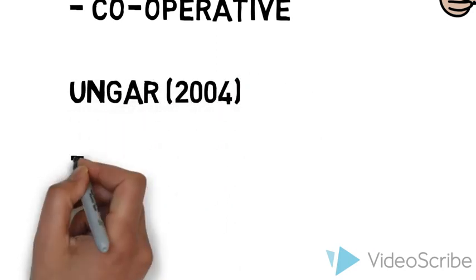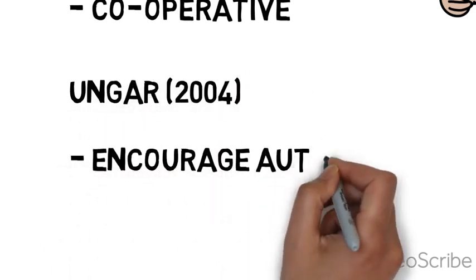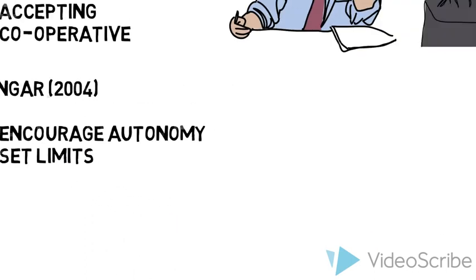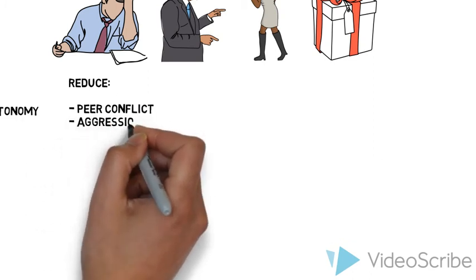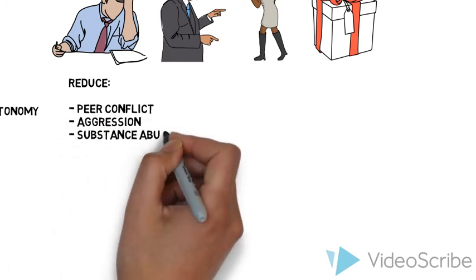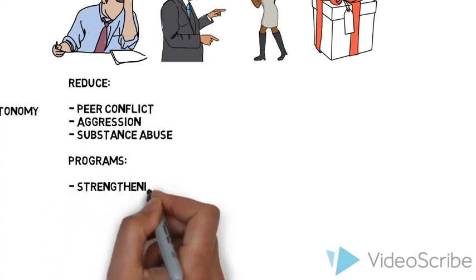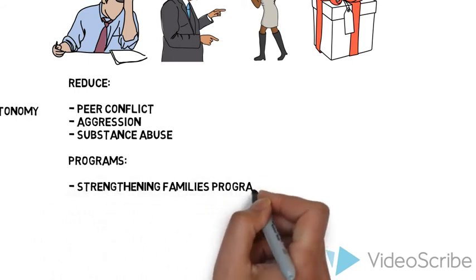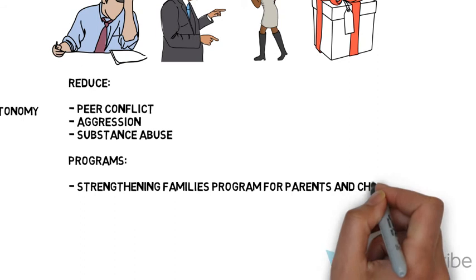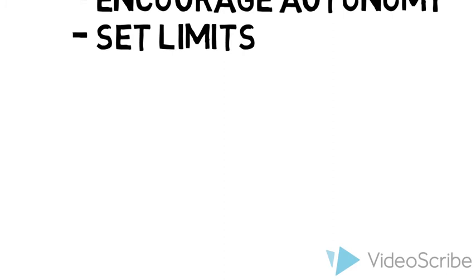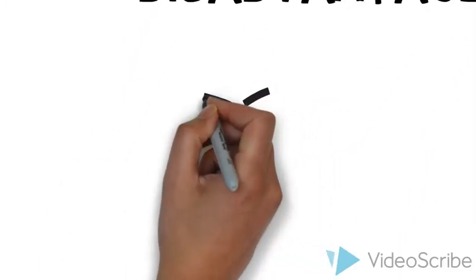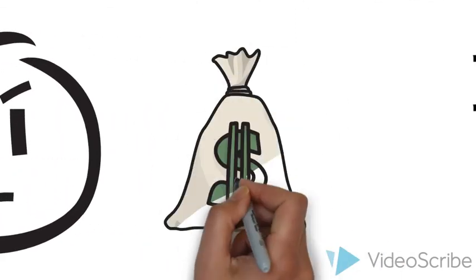Steinberg believes that caregivers must provide a balance between encouraging autonomy and setting limits. As a year advisor, we could advise Dylan's parents to participate in family strengthening programs that teach family management skills that have been proven to reduce peer conflict, aggression and substance use. Examples of such programs include the Strengthening Families Program for Parents and Children and Functional Family Therapy. A disadvantage associated with this intervention could be a lack of cooperation from both Dylan and his parents or even the cost of attending therapy sessions.